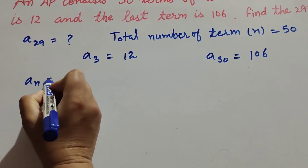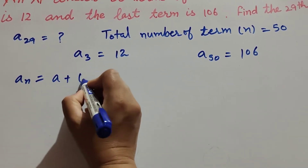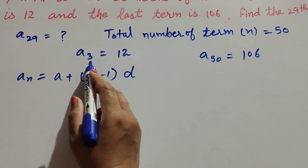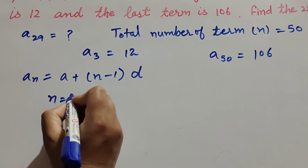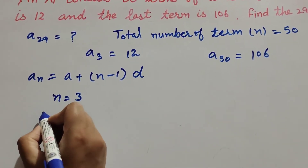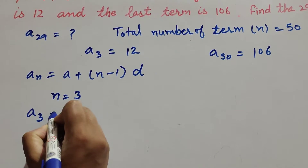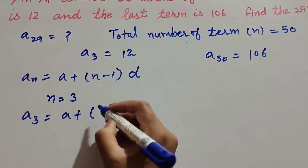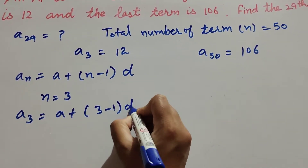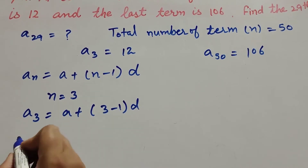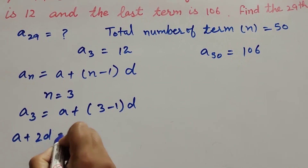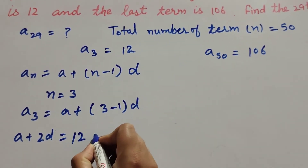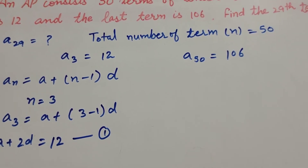We know the formula to find the nth term of an AP: AN is equal to A plus (N minus 1) times D. For A3, N is equal to 3, and the third term equals 12. So A3 equals A plus (3 minus 1)D, which gives us A plus 2D equal to 12. We mark this as equation number 1.